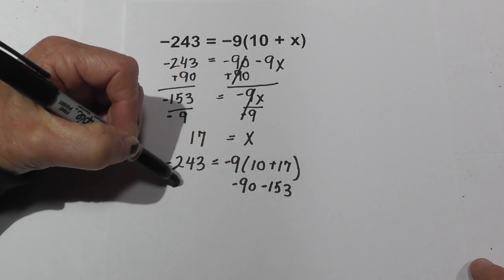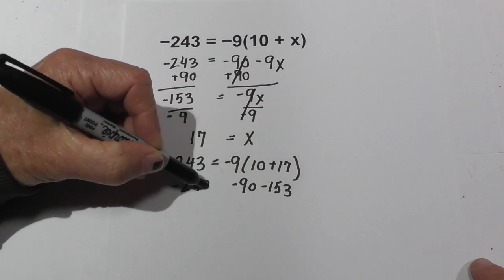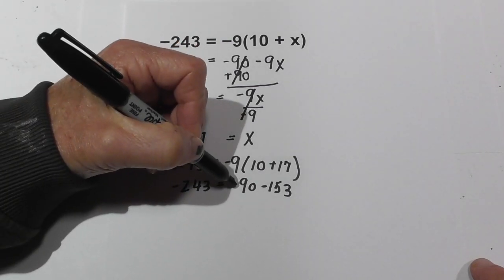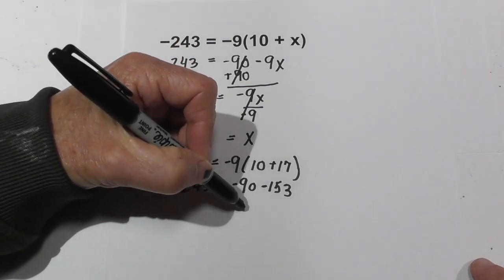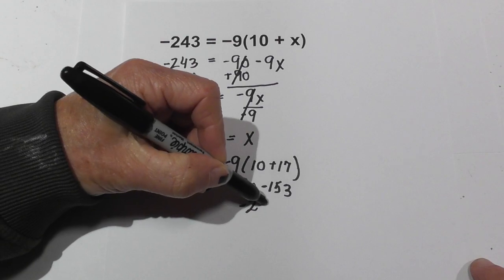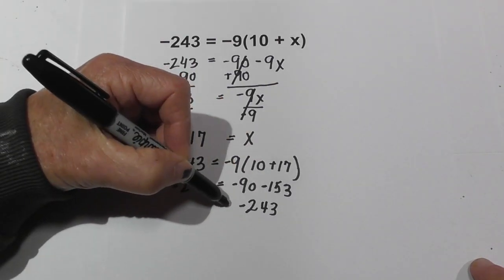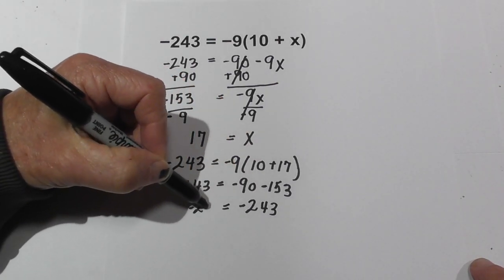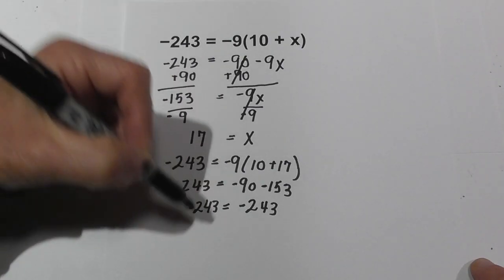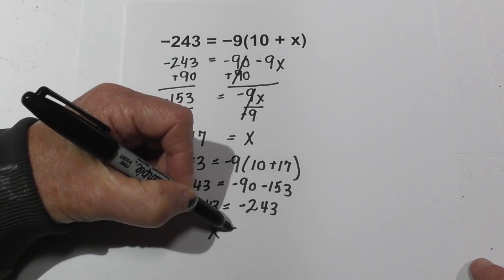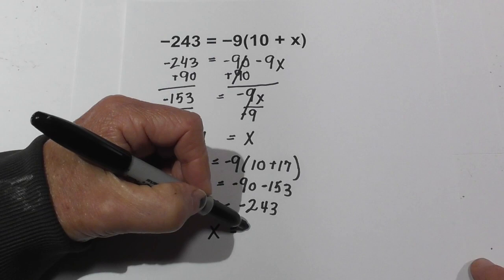Negative 9 times 17 is a negative 153. When I add these together I'm going to bring down the negative 143. When I add negative 90 and negative 153 it does indeed equal a negative 243. So our answer is correct and that is x is equal to 17.